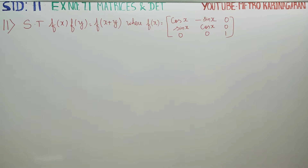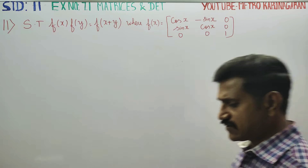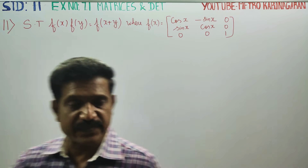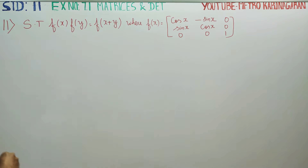Dear Learn Standard students, in exercise number 7.1, sum number 11, show that f(x) into f(y) is equal to f(x+y), where f(x) is equal to the given matrix.